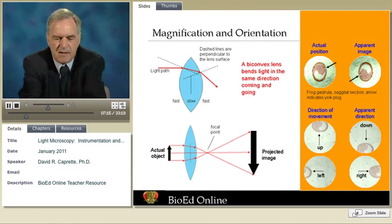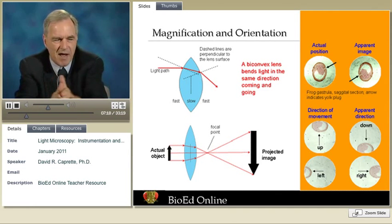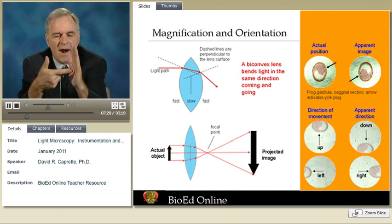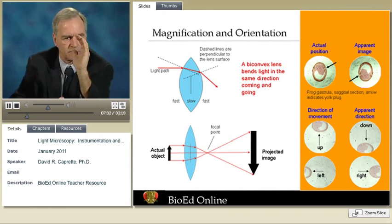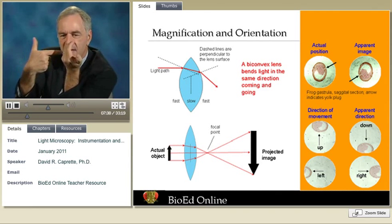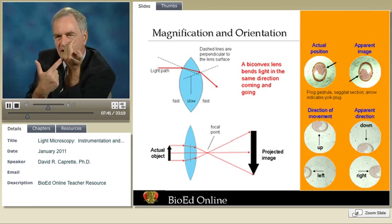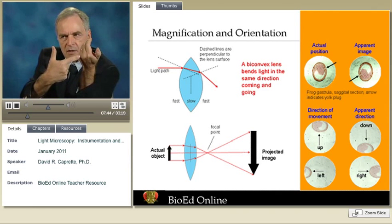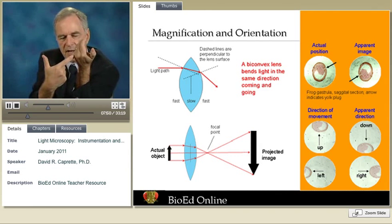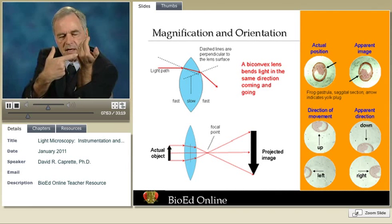The property of refraction can be used to design a magnifying lens. A double-convex lens is the type used in a microscope objective. On a convex surface, if light comes straight on, it passes straight through. If it comes at an angle, it angles toward the perpendicular to the surface, which means that light striking a convex surface always focuses more toward the middle of the lens.